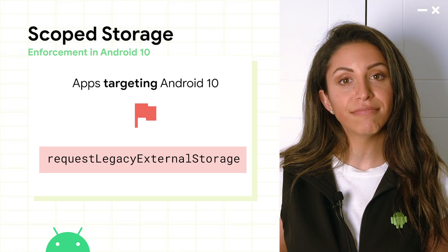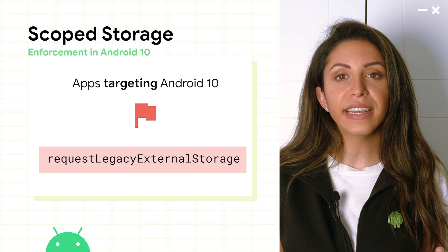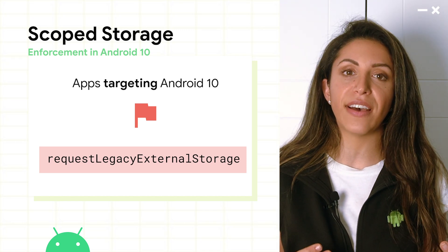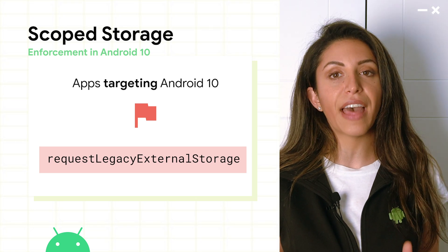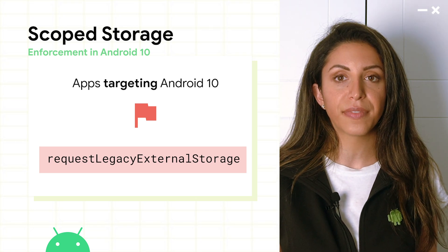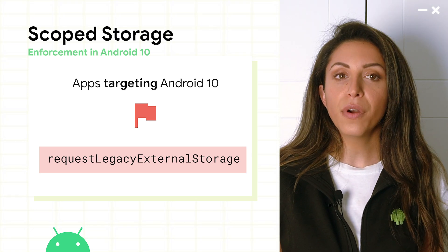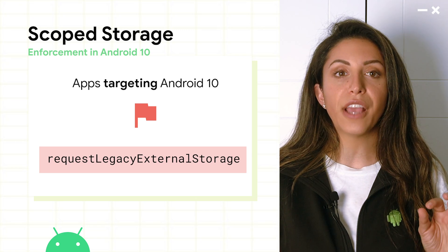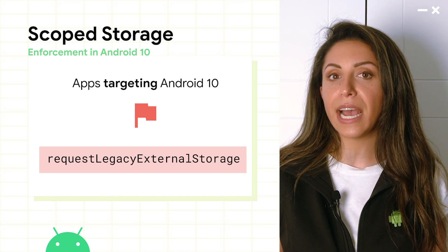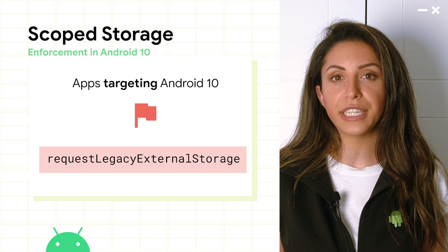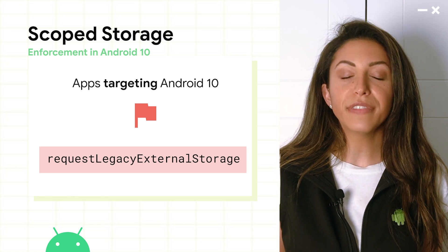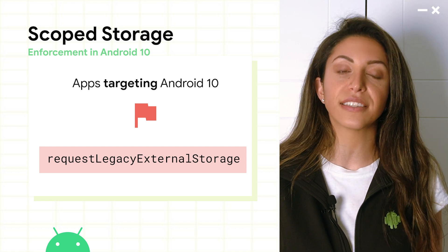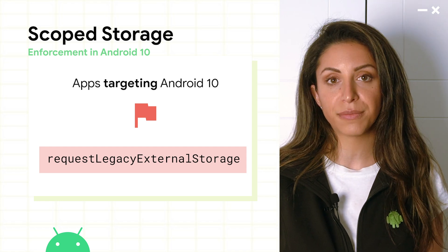While many apps have successfully migrated to scoped storage on Android 10, we recognize that we didn't sufficiently satisfy all of the use cases in that release. Therefore, for apps targeting Android 10, we included the option to opt out of scoped storage with a flag in the manifest called RequestLegacyExternalStorage.